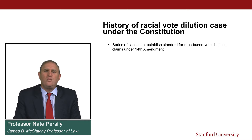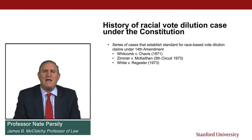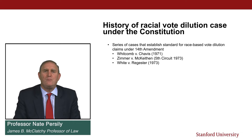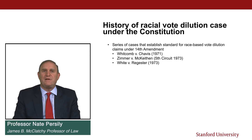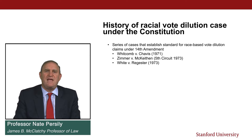The history of racial vote dilution under the Constitution includes cases like Whitcomb versus Chavis and White versus Register, which established in the 1970s the early rules on how to prove racial discrimination under the Equal Protection Clause for vote dilution. Those were supplanted by Mobile versus Bolden, which preceded the enactment of the 1982 Amendments to the Voting Rights Act.